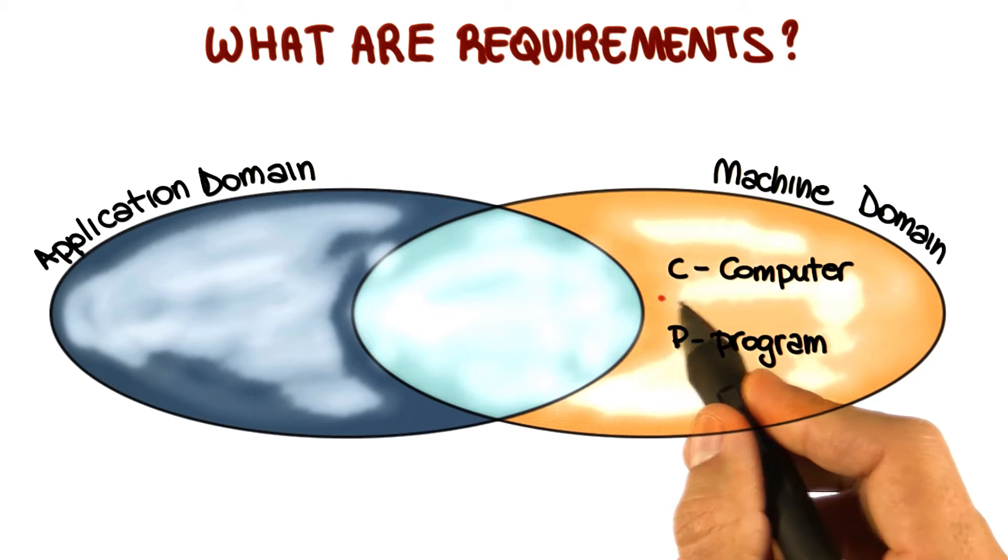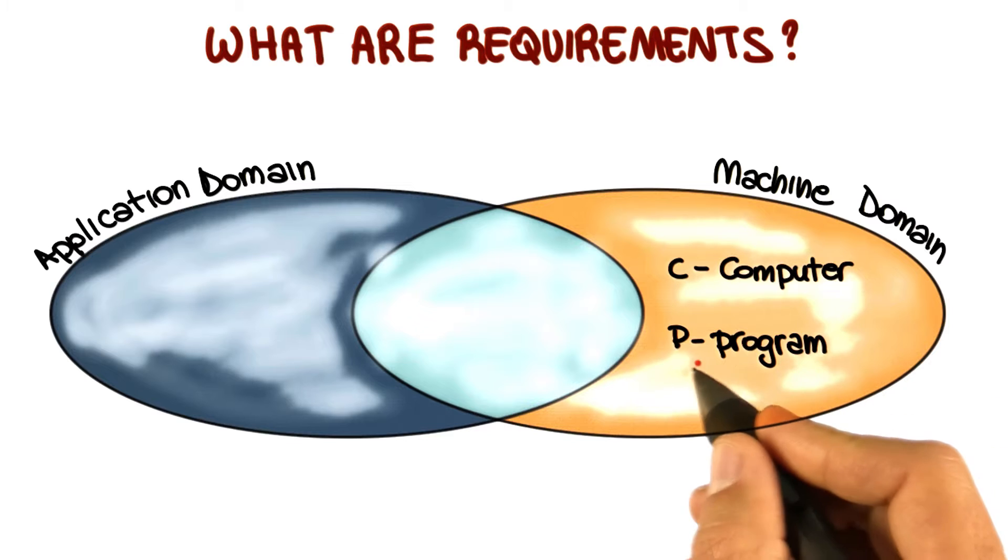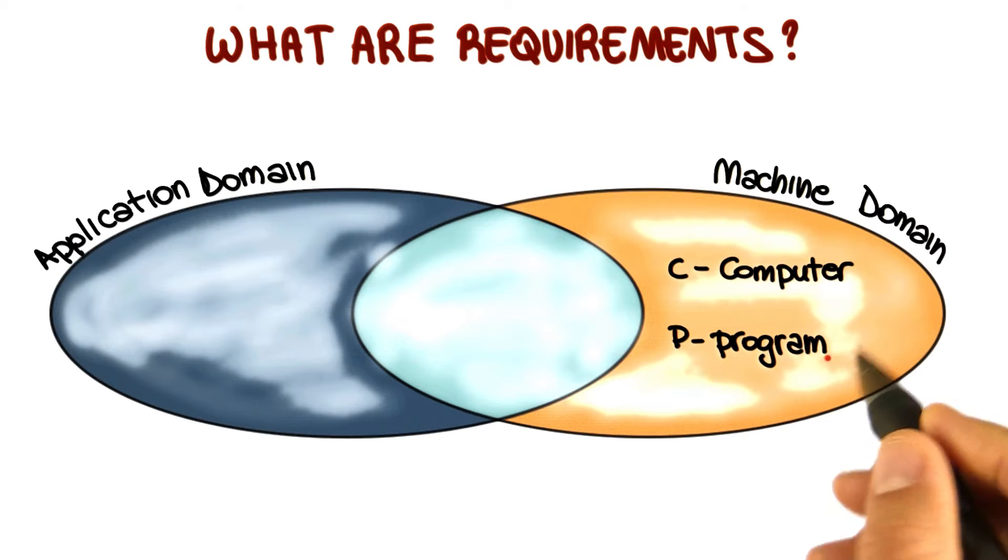The machine domain is characterized by computers, which are the hardware devices, and programs, which is the software that runs on these devices.